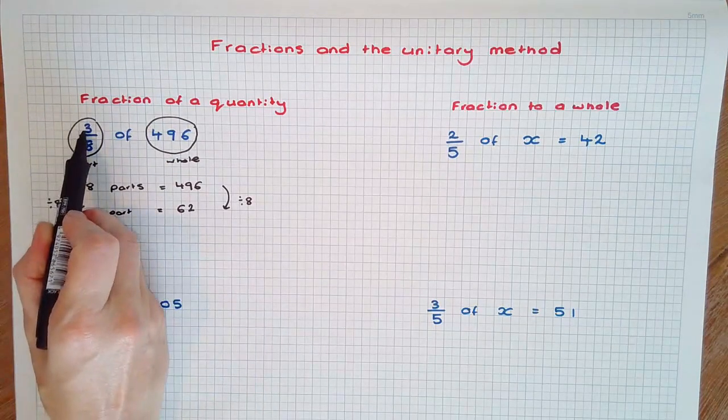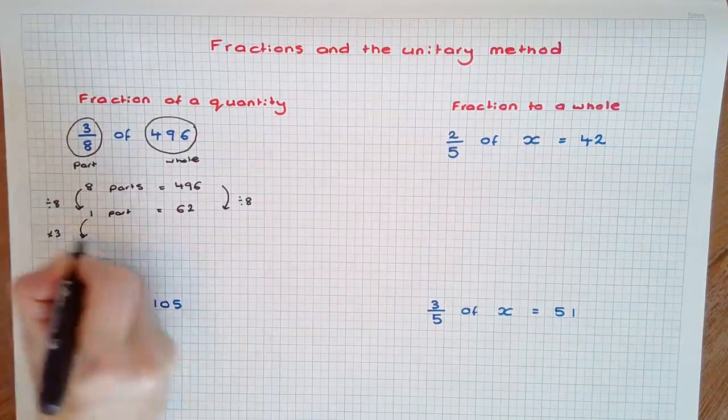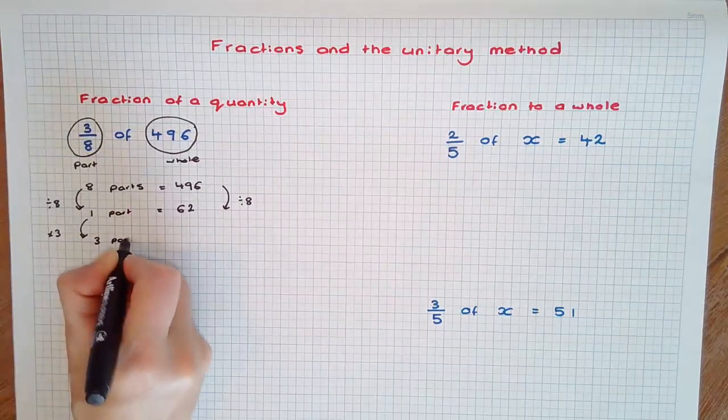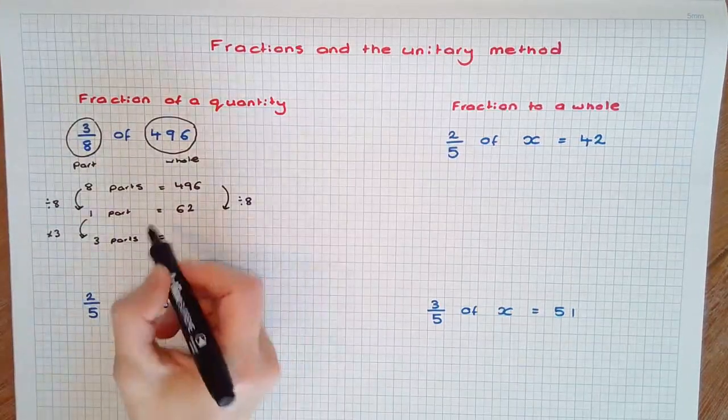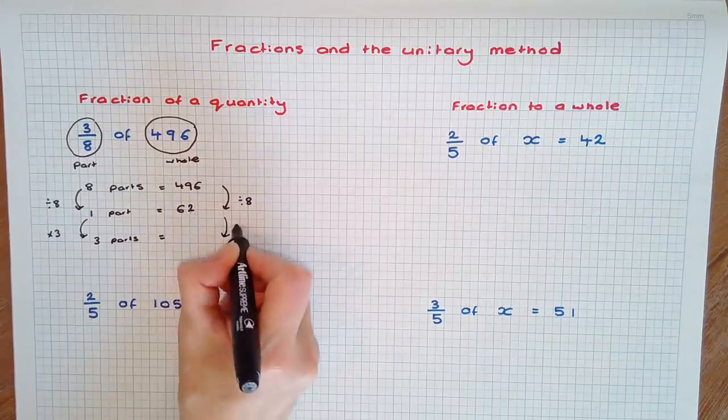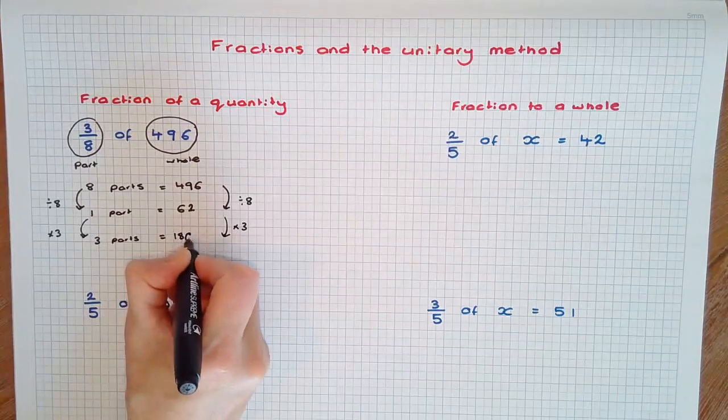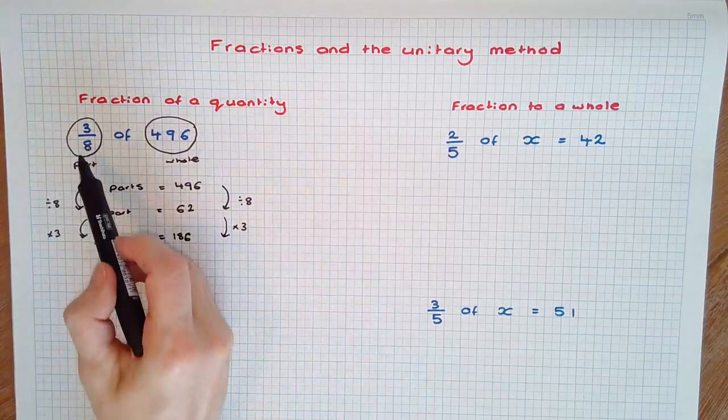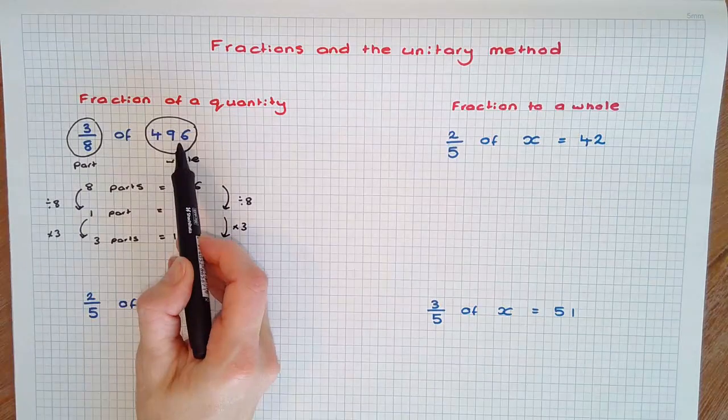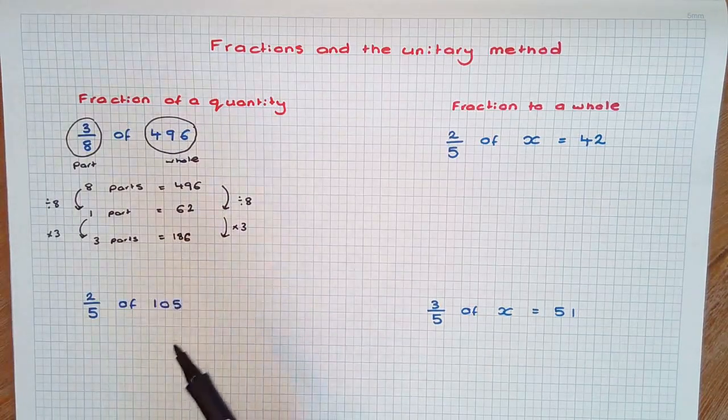Now we need to find 3 parts. Multiplying 62 by 3, we find the answer is 186. So 3 eighths of 496 using the unitary method is 186.